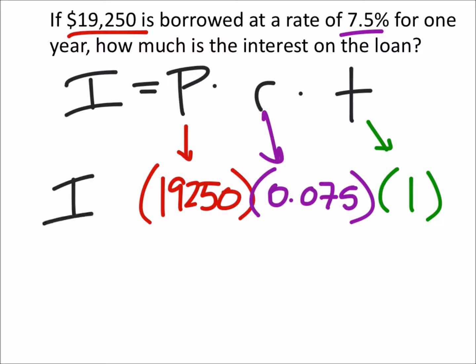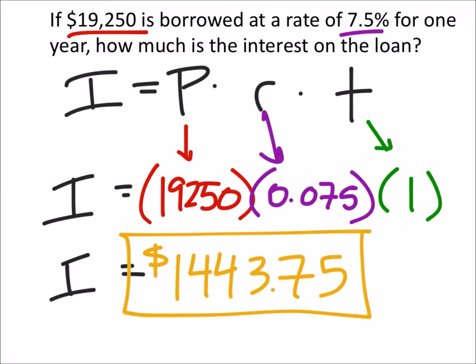So to find our interest on this, we just need to multiply this out. Don't forget to label that, but this is our interest: $1,443.75.